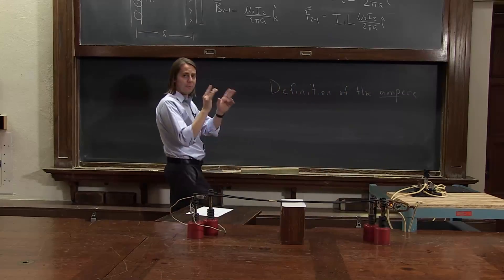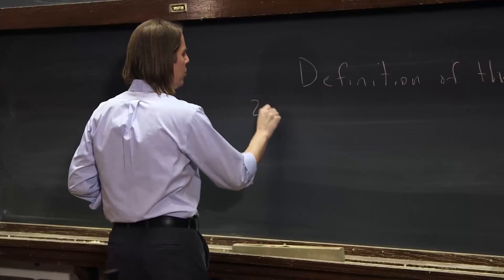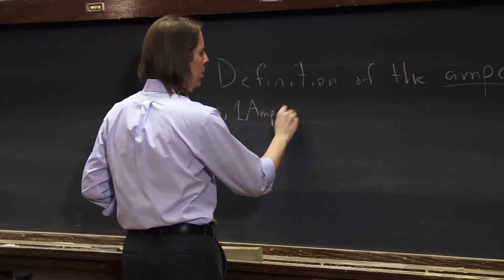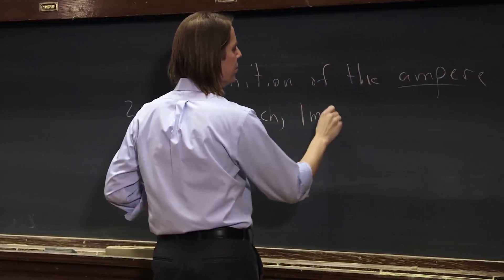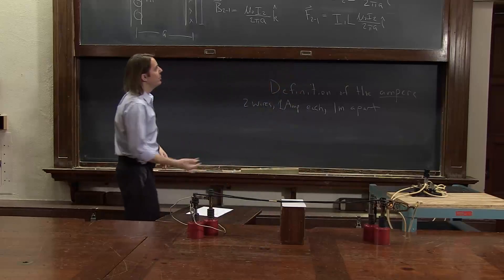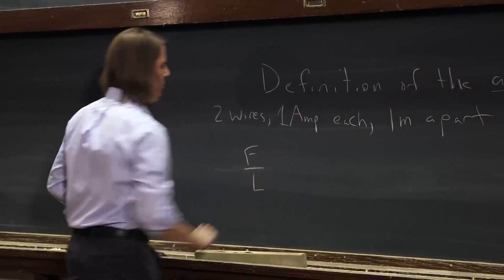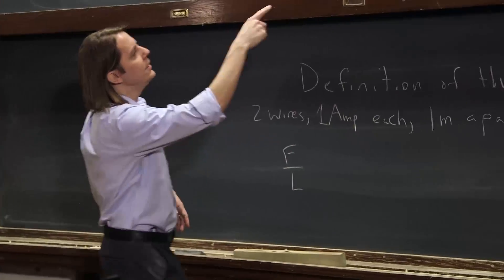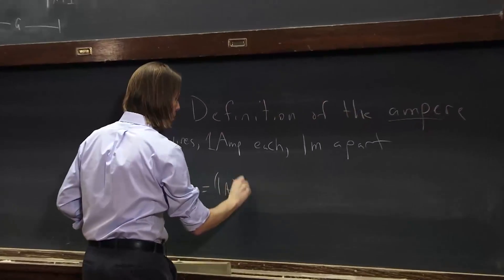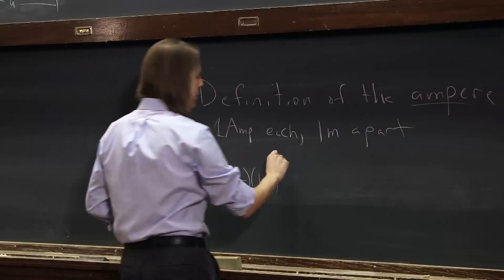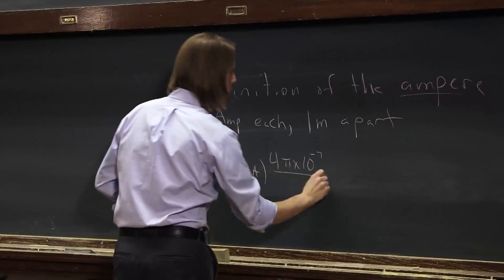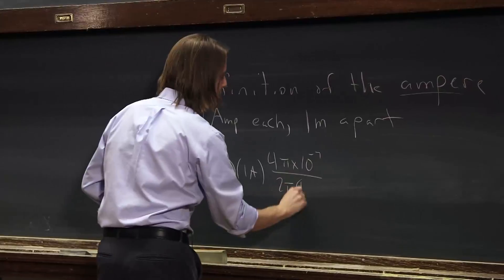The ampere is defined in terms of the force of two wires. So if we imagine two wires, one amp each, one meter apart, we can calculate the force per unit length. Let's see, so F over L would be the current, one amp, times another current, one amp, times mu naught, which is 4 pi times 10 to the minus 7 over 2 pi times a, which is 1 meter.